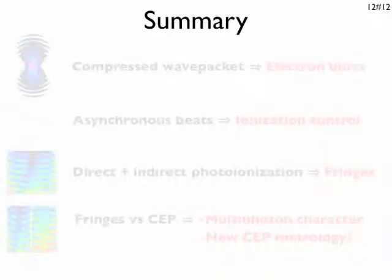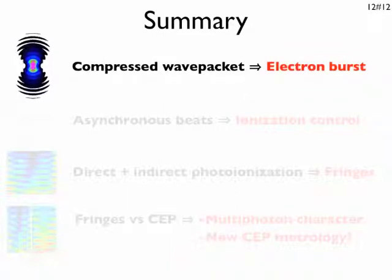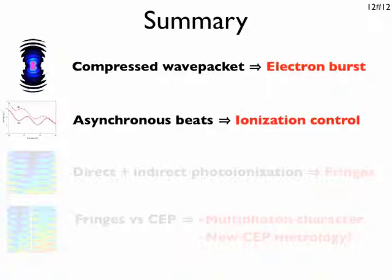In summary, we have seen that a metastable wave packet ejects bursts of electron density when compressed. That asynchronous quantum beats give control over ionization branching ratios.